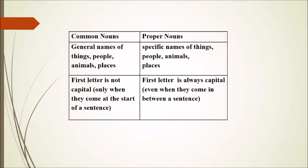Let's compare common and proper nouns. Common: general names of things, people, animals, and places. Proper: special names of things, people, animals, and places. In common nouns, the first letter is not capital — only when they come at the start of a sentence. In proper nouns, the first letter is always capital, even when they come in between a sentence.